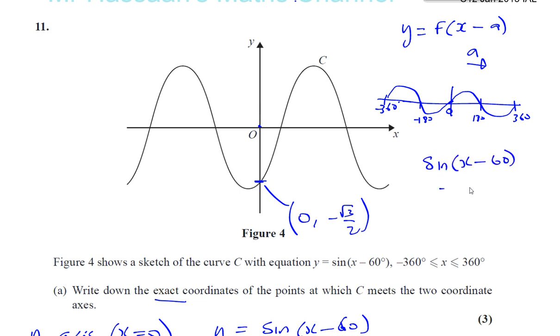So everything has shifted 60 degrees to the right. So this is going to be, it was there, it's going to be 60 degrees. This was at 180 before, it's going to be 60 degrees to the right, so that would be 240. This would have been at minus 360, so it's going to be 360 to the right, that's going to be 300. And this would have been minus 180, but it shifted 60 degrees to the right, so it's going to be minus 120.